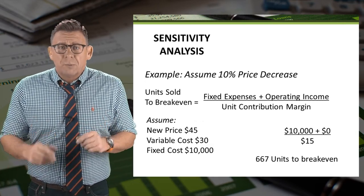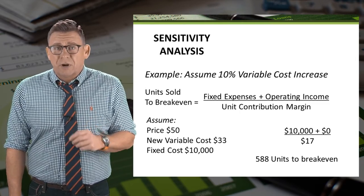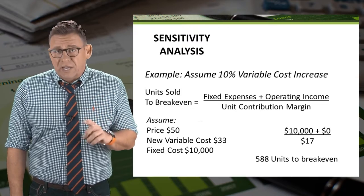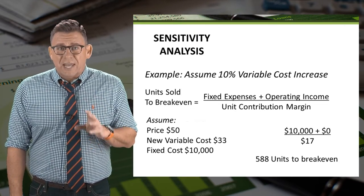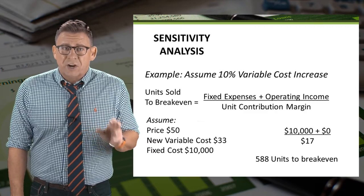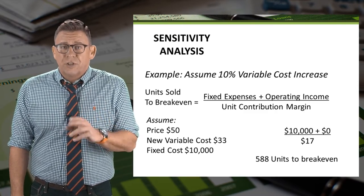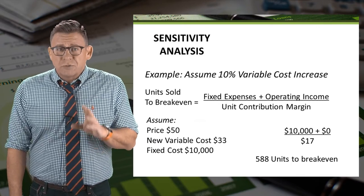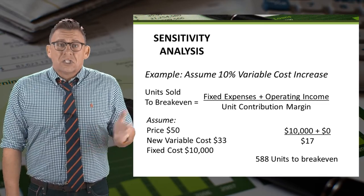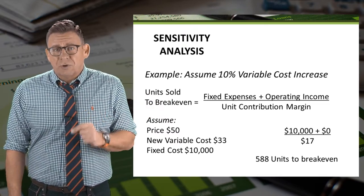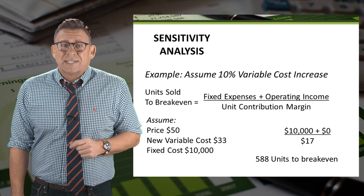What if variable costs are increasing, let's say 10%? What is the breakeven now? We need to calculate the new unit contribution margin. In this case, a 10% increase in variable costs increases it from $30 to $33, and drops unit contribution margin from $20 to $17. So breakeven in units increases to 588 units with a variable cost increase.